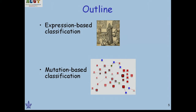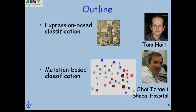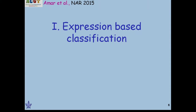We'll talk about two projects: one focuses on expression and the other on mutations. We come from the angle of classification, but the emphasis will be not on the classification itself, but on the biomarker genes, which we view as indicative of the disease. This was done jointly with Tom Haidt, a student in my group, and Shai Zraeli, an oncologist at Shiva Hospital.